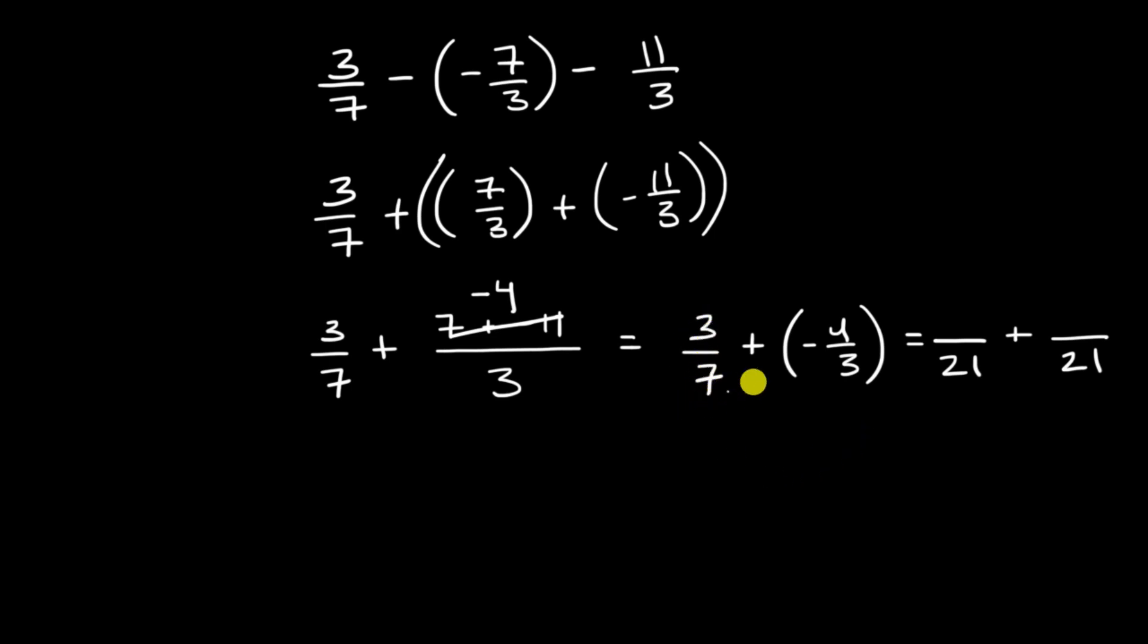3 over 7, to go from 7 to 21, you multiply by 3. So 3 times 3 is 9. And then to go from 3 to 21, we multiply by 7. So if we have negative 4 times 7, that is negative 28.